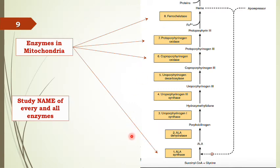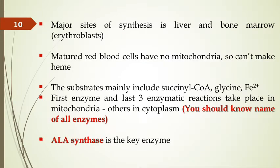A summary figure shows all eight enzymes: glycine and succinyl CoA enter the first mitochondrial step (ALA synthase); the arrows indicate coproporphyrinogen oxidase, protoporphyrinogen oxidase, and ferrochelatase as the last three mitochondrial enzymes. Study two or three reactions per day according to your capability. The major site of heme synthesis is the bone marrow.